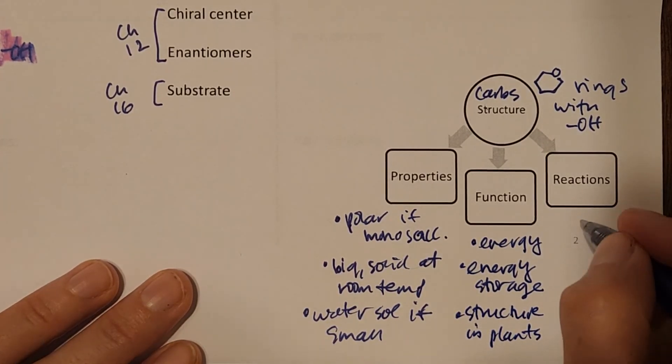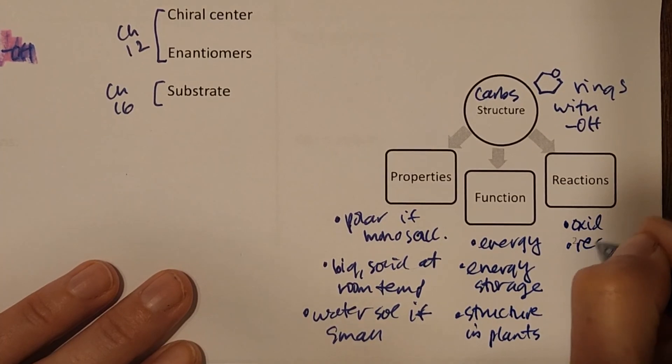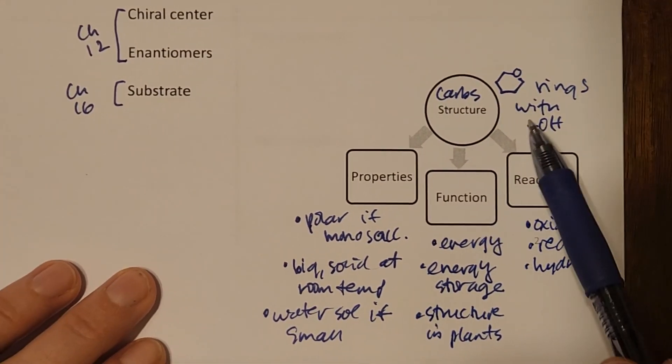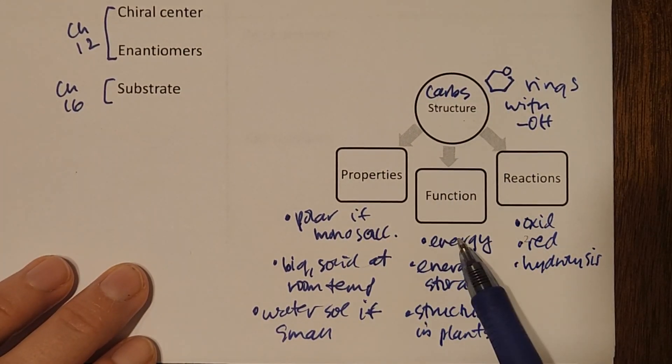Finally, the reactions that we're going to see in this chapter: oxidation, reduction, and hydrolysis, as we mentioned before. So we're going to learn about these sugars that have these properties, these functions, and these reactions. Let's take a look and see.